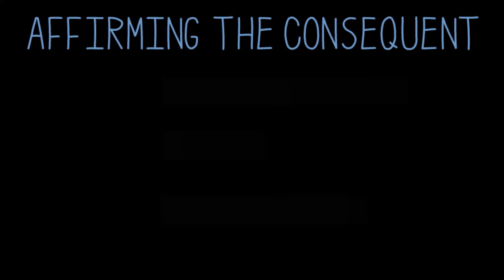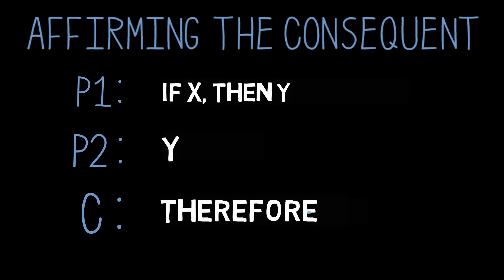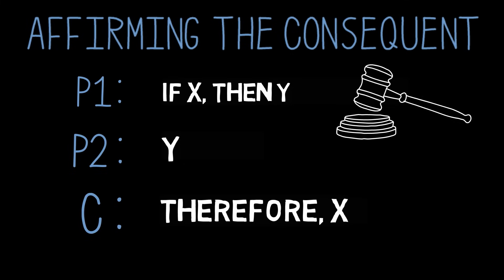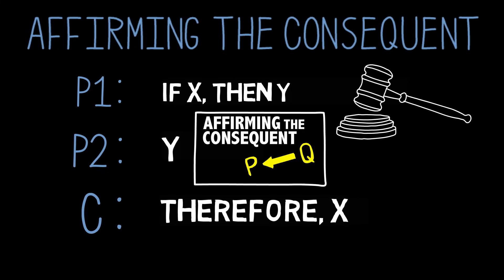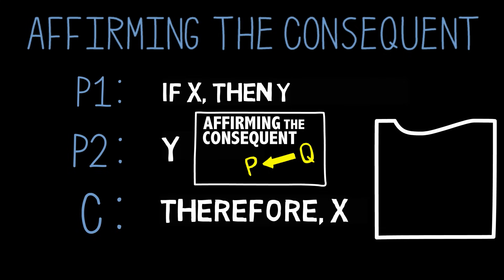This form of fallacy can be represented as: if x, then y. Y, therefore x. And this is a form you don't want to use. This is actually one of the fallacies frequently tested on the LSAT. So if you're interested and want more practice identifying this fallacy, check out the video on affirming the consequent. We will talk more about this and other formal fallacies in upcoming videos. But for now, we need to see that formal fallacies are fallacies because of the poor form of the argument — any argument of these forms will be invalid.